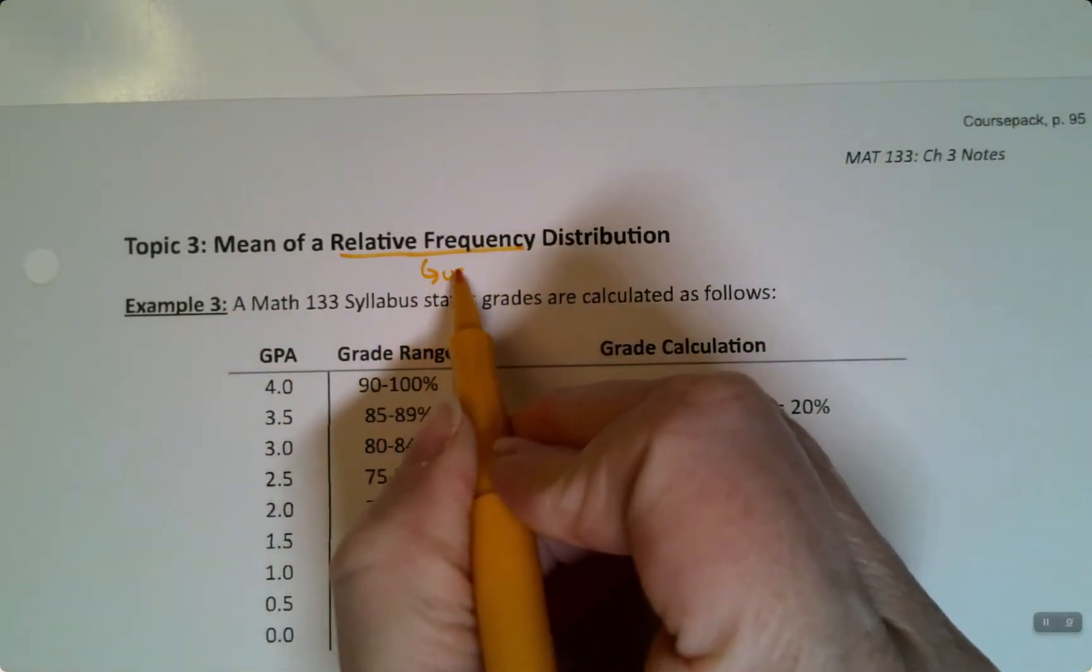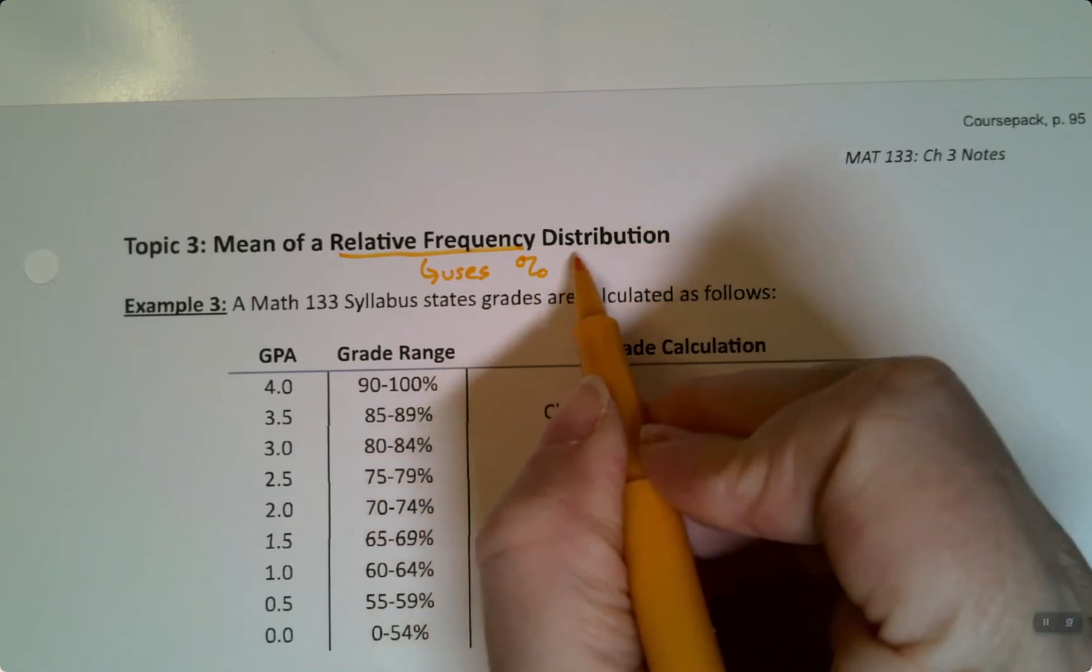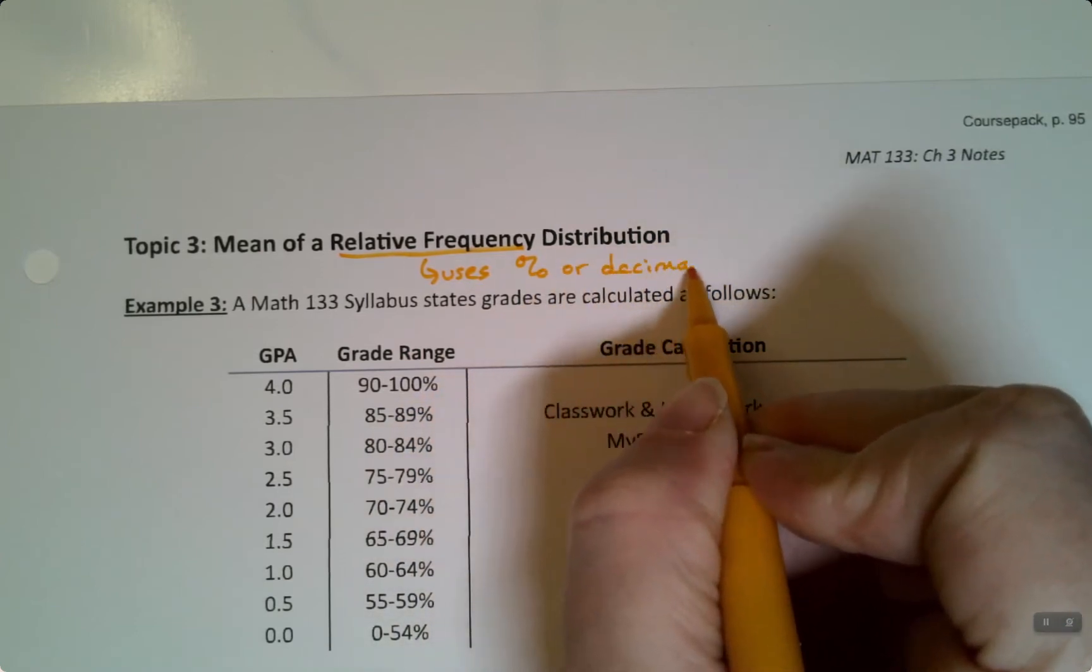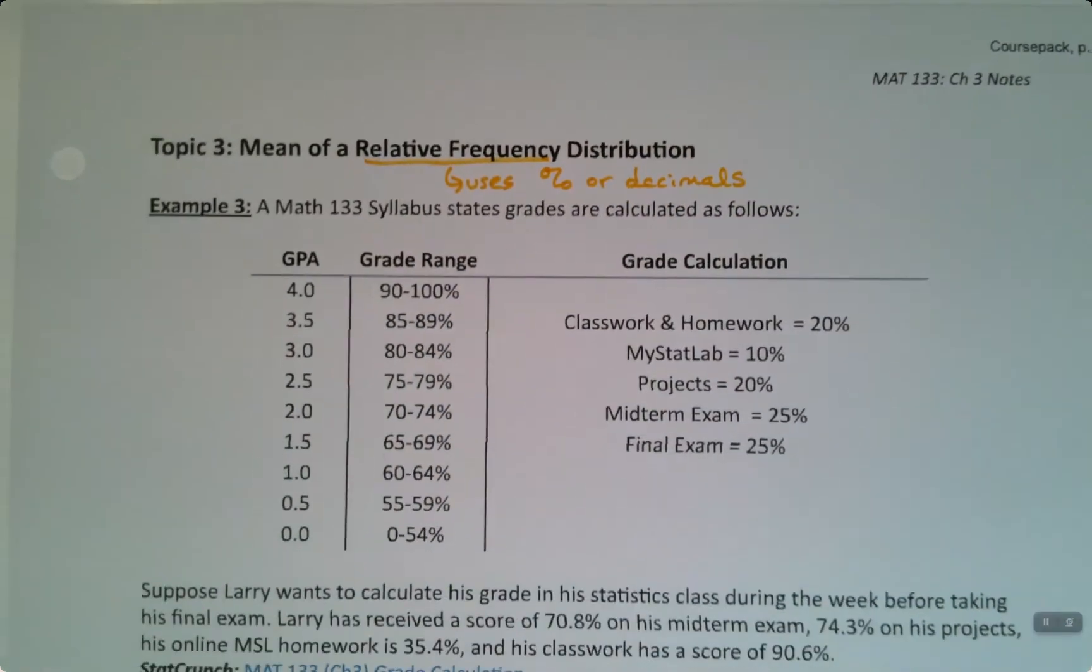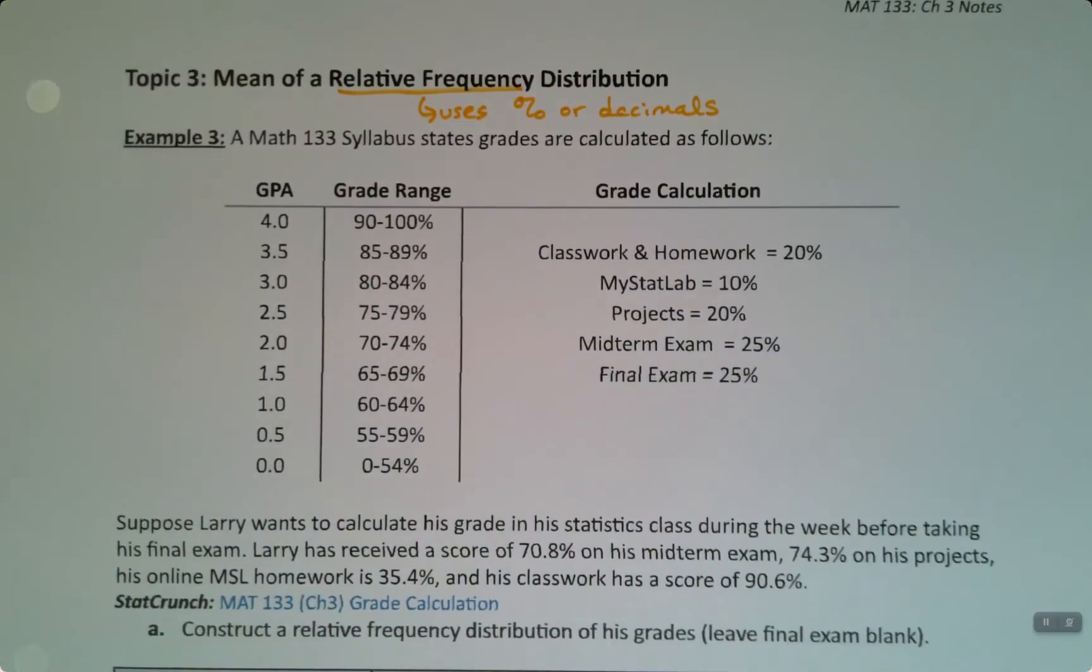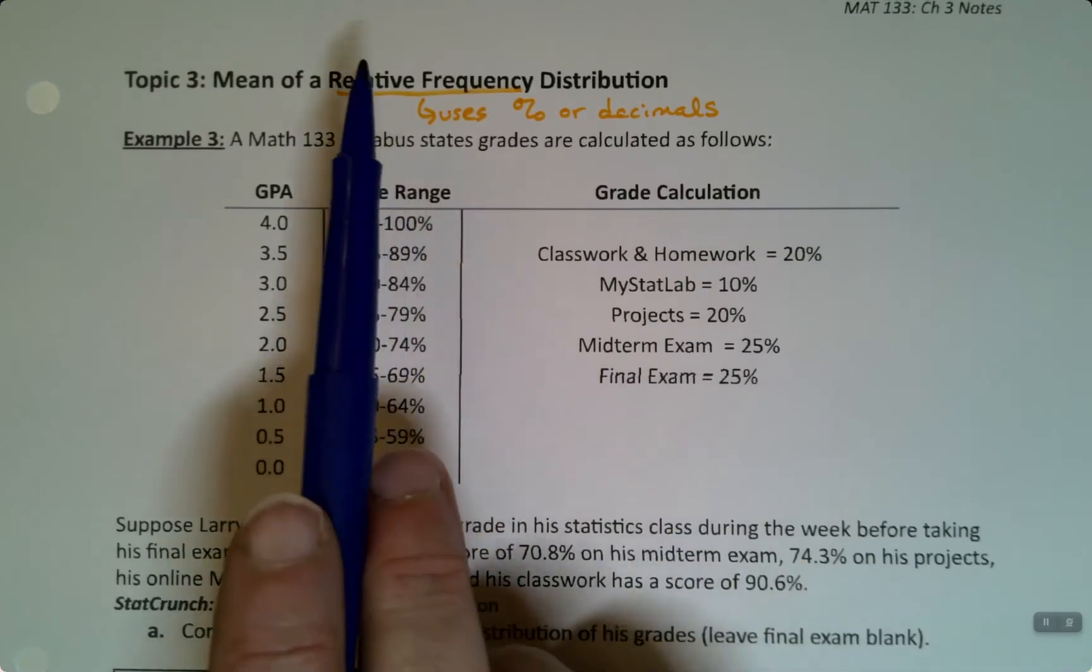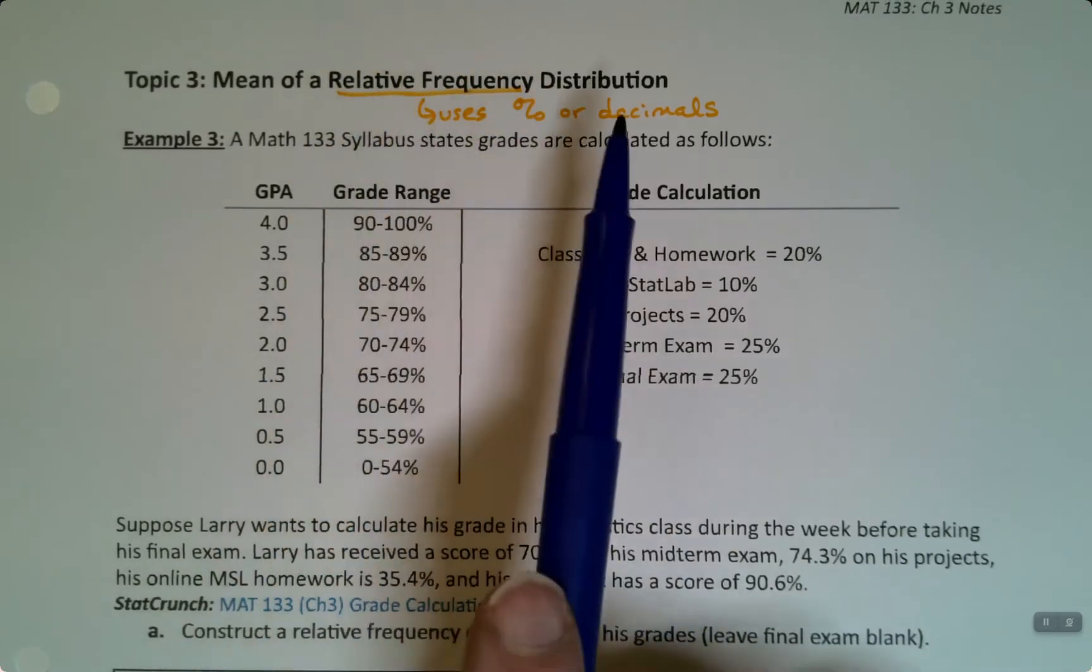It uses percents or decimals. If you have an instructor who uses points, they'll say this is worth 200 points, this is worth 300 points, etc. They're doing the same thing, it's just not relative. It's a frequency distribution then.